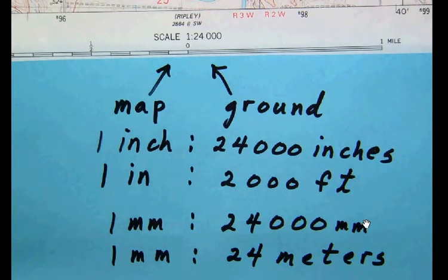So if you want to know how far it is from point A on your map to point B, simply take that distance in millimeters and multiply by 24. You will have your distance then on the ground.